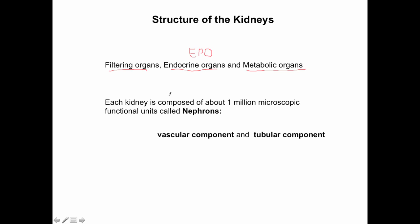Each kidney is composed of functional units called nephrons. A nephron is the smallest functional unit in the kidney — the smallest unit that individually produces urine. We have about a million nephrons per kidney, and we're born with that number. Each nephron contains a vascular component — blood vessels associated with the nephron — and a tubular component, which is the actual tubule where urine is formed.